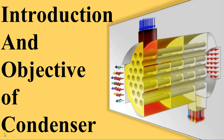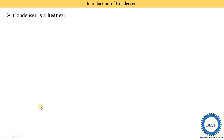In this video I explain the introduction and objectives of condensers. A condenser is a type of heat exchanger. A heat exchanger is a device in which heat is transferred between two substances or two mediums. The name 'condenser' is given because in this heat exchanger a condensation process is carried out.